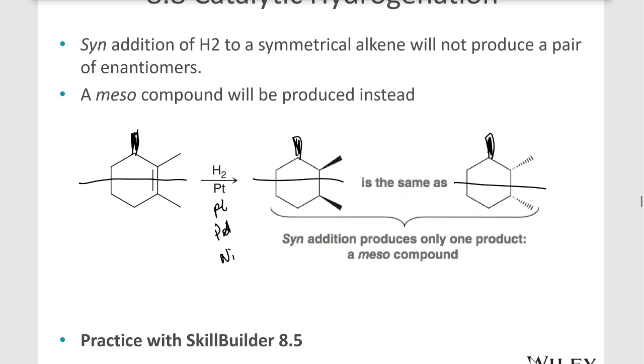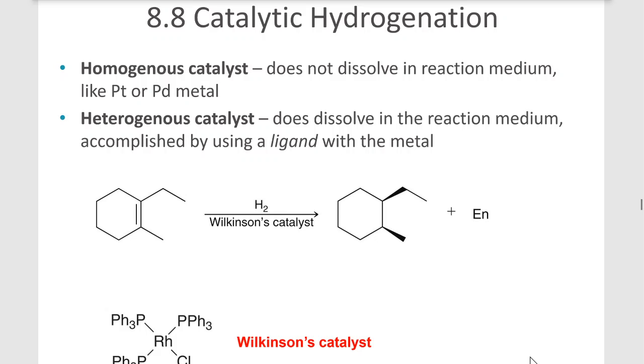Sometimes we want our catalyst to be able to dissolve in solution, and for that we have an option of a homogeneous catalyst. This is called Wilkinson's catalyst, where we have ruthenium connected to triphenyl phosphines. This can dissolve in solution and we get the same product—the hydrogens adding to one face or the other of the double bond.